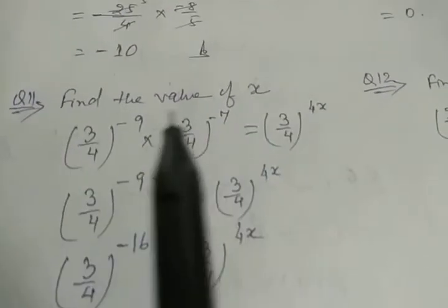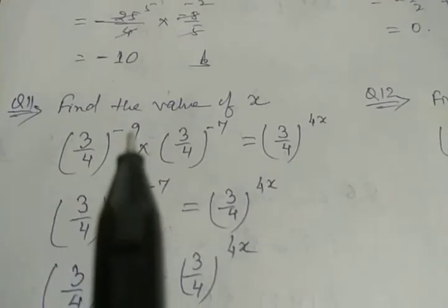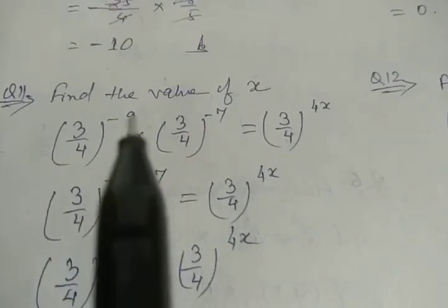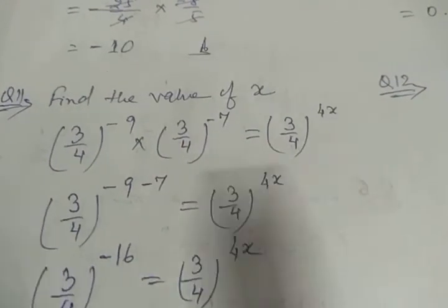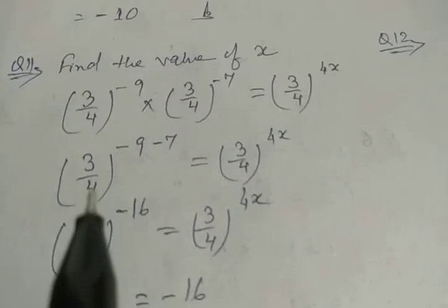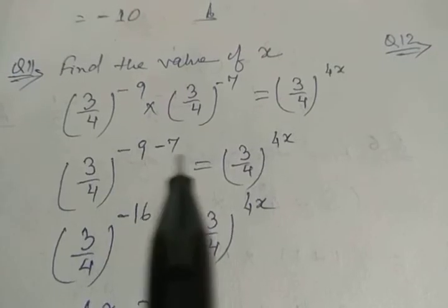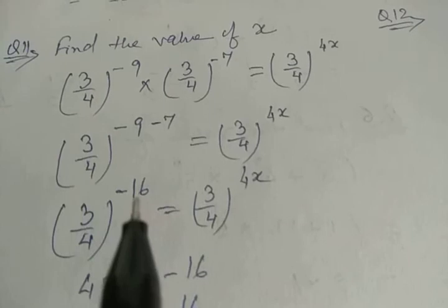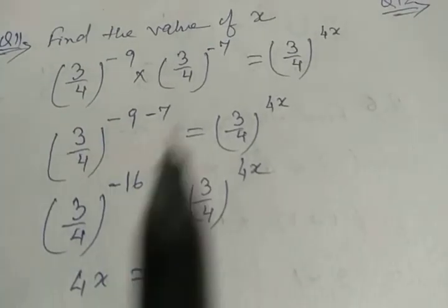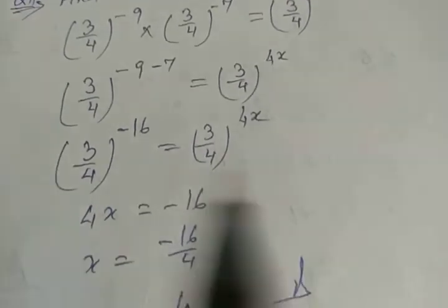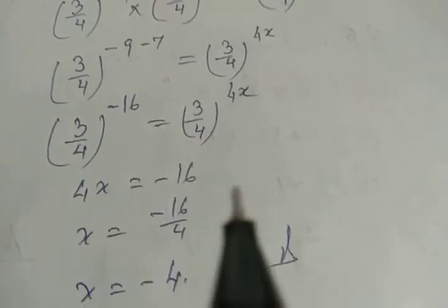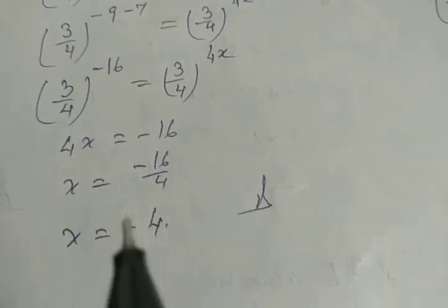Next problem: find the value of x. (3/4)⁻⁹ × (3/4)⁻⁷ = (3/4)^(4x). Everywhere base is same. It is multiplication so powers are added: minus 9 plus minus 7 = minus 16. So (3/4)^(-16) = (3/4)^(4x). Since base is same, exponents are equal: 4x = -16, so x = -16/4 = -4.